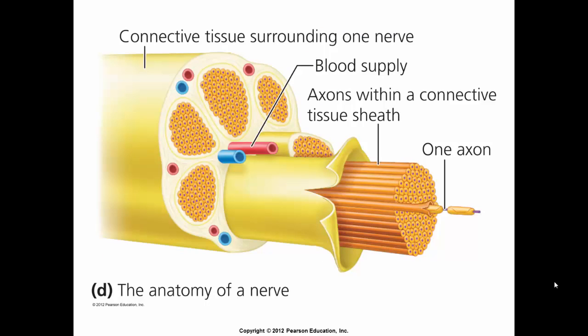This image shows the anatomy of the nerve surrounded by connective tissue. It has a blood supply to deliver nutrients and oxygen, and it contains the axons that we've studied within.